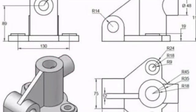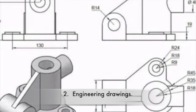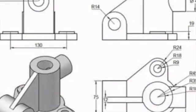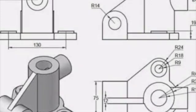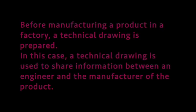2. Engineering drawings. Before manufacturing a product in a factory, a technical drawing is prepared. In this case, a technical drawing is used to share information between an engineer and the manufacturer of the product.